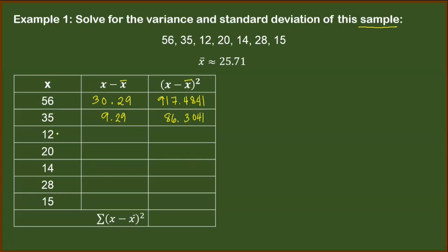Next, for 12: 12 minus 25.71 gives us negative 13.71. Squaring this value, we have 187.9641. Then for 20: 20 minus 25.71 is negative 5.71. Squaring this value, we have 32.6041. Wait — squaring negative 5.71 gives us 32.6041. Then for 14: 14 minus 25.71 is negative 11.71. Squaring this value, we have 137.1241.